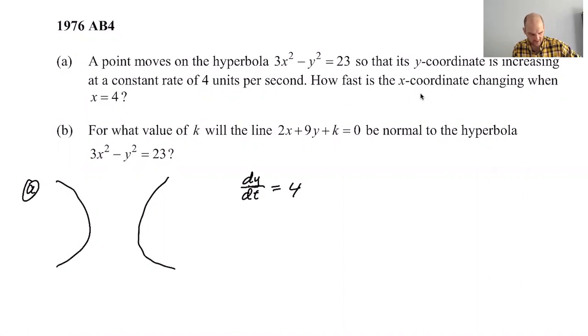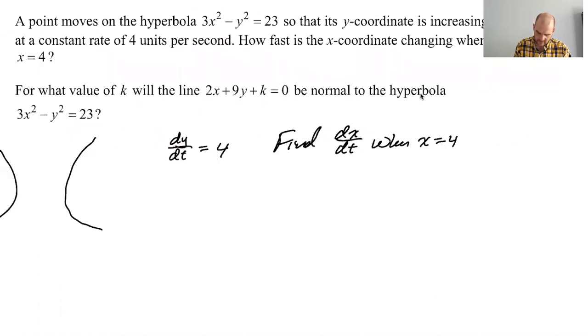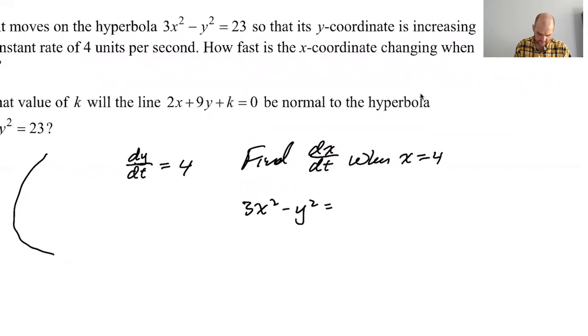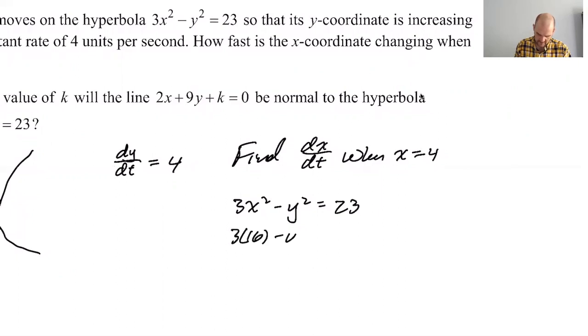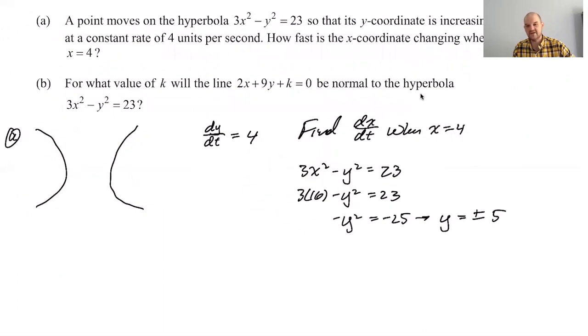So I kind of actually think this is an interesting question because there's two y values when x is equal to four, right? So if x is equal to four, you get three times 16 is 48 minus y squared equals 23. So then y squared, well, I have to do that work anyway. So let me do the work.